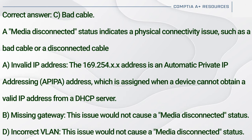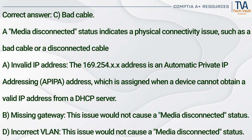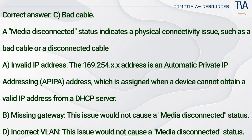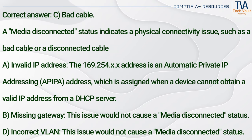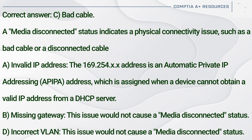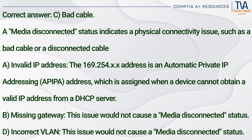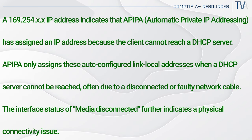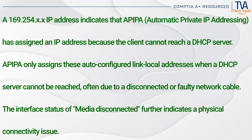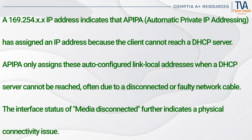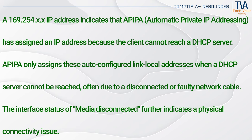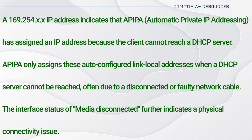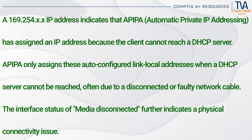Correct answer: C. Bad cable. A media disconnected status indicates a physical connectivity issue such as a bad or disconnected cable. The 169.254.x.x address is an APIPA address (A), which is assigned when a device cannot obtain a valid IP address from a DHCP server. Missing gateway (B) would not cause a media disconnected status. APIPA only assigns these auto-configured link-local addresses when a DHCP server cannot be reached, often due to a disconnected or faulty network cable. The interface status of media disconnected further indicates a physical connectivity issue.